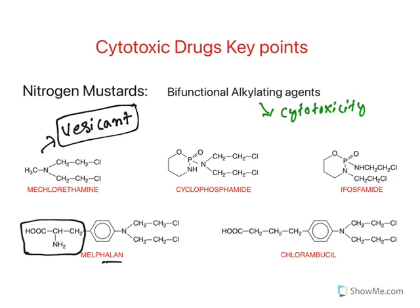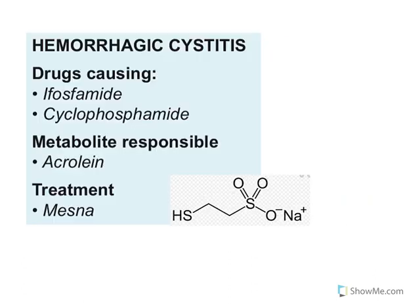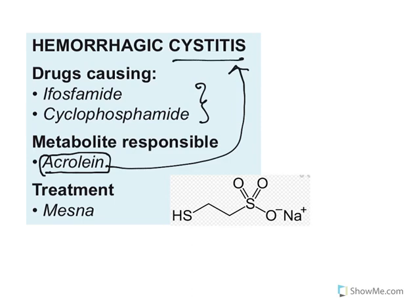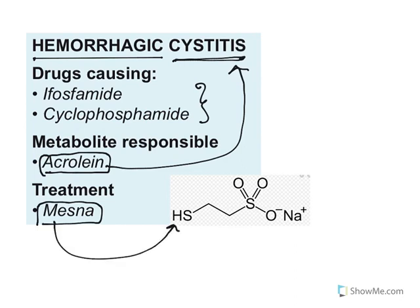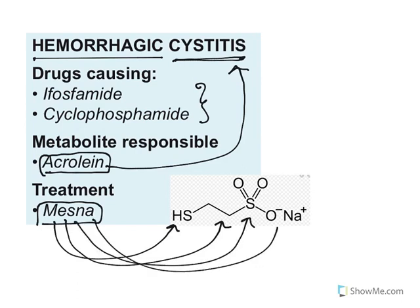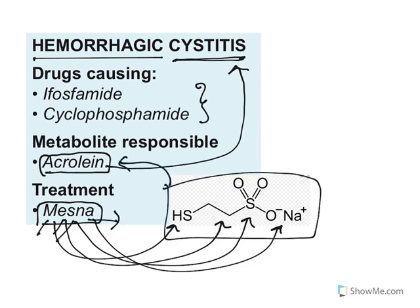Cyclophosphamide and ifosfamide are prodrugs — they need metabolic activation to release the active drug. Both release a metabolite known as acrolein, which causes hemorrhagic cystitis — bladder inflammation resulting in bleeding (hemorrhagic = bleeding, cystitis = bladder inflammation). This can be treated using a drug called mesna (mercaptoethyl sulfonate sodium). Mesna combines with acrolein and reduces its toxicity. These drugs are usually given along with mesna.